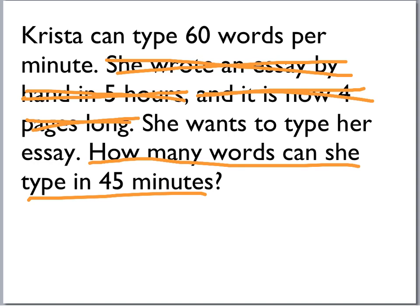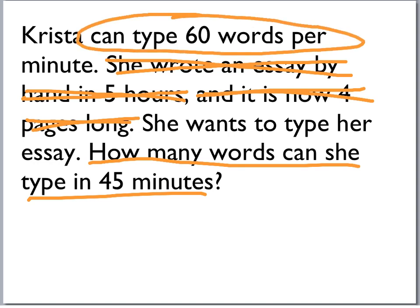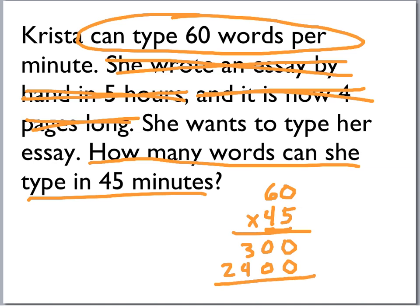All we really need to know is that she can type 60 words per minute. So 60 words per minute — how many words can she type in 45 minutes? All we have to do is take 45 times 60: 5 times 0 is 0, 5 times 6 is 30; then 4 times 0 is 0, 4 times 6 is 240. Add those together and we get 2,700. She can type 2,700 words in 45 minutes.